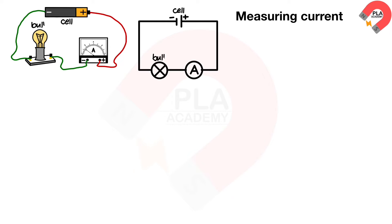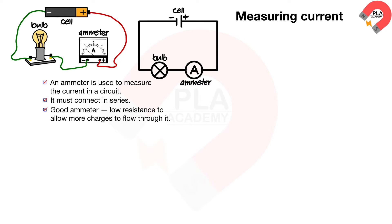This is a light bulb. This is an ammeter, which are two types as digital and analog. It is used to measure the current in a circuit. It must connect in series. Good ammeter should have low resistance to allow more charges to flow through it.